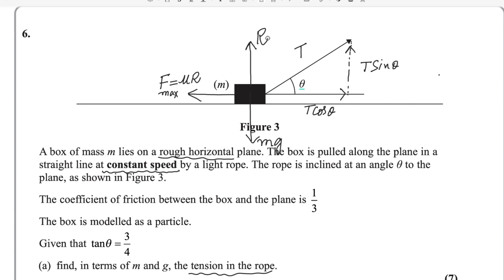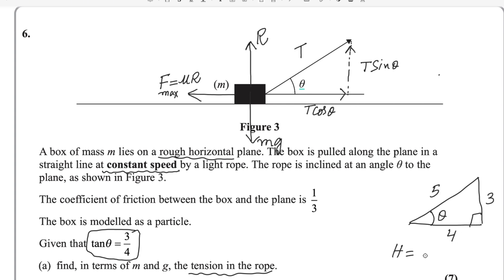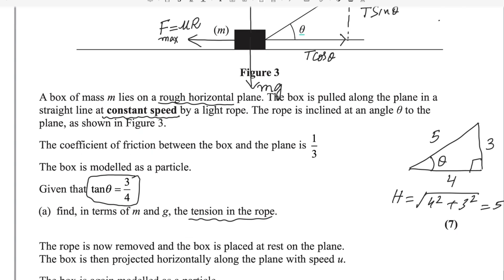Here is a very useful trick. Whenever tan theta is given, by drawing a right triangle you can find the other trigonometric ratios — sine and cosine. Since tan theta equals opposite over adjacent, we set the opposite side as 3 and the adjacent as 4. Using the Pythagorean theorem: the hypotenuse equals √(4² + 3²) = 5. Therefore, sin theta = 3/5 and cos theta = 4/5. These two values will be very useful for solving this question.